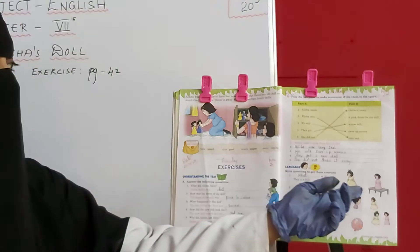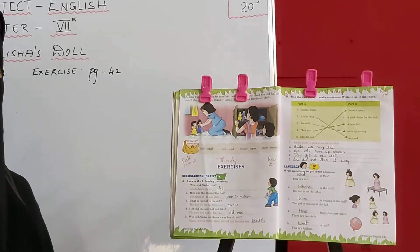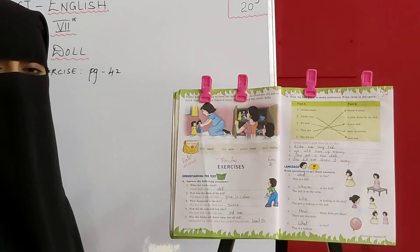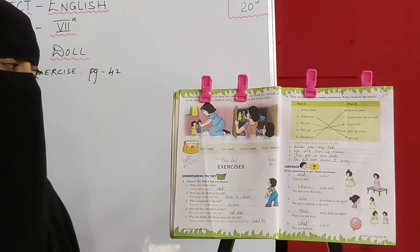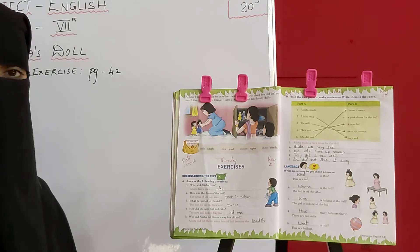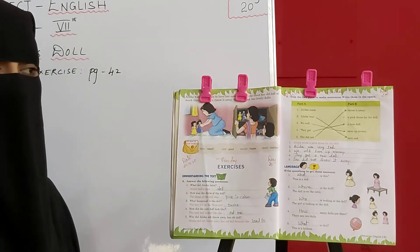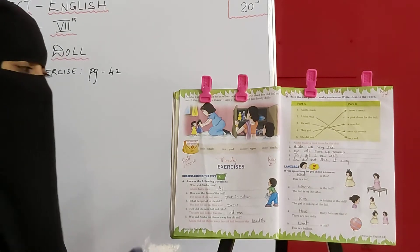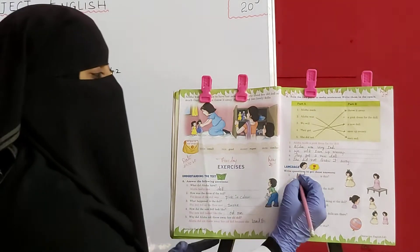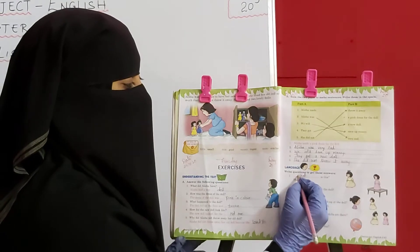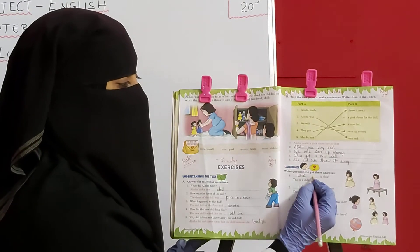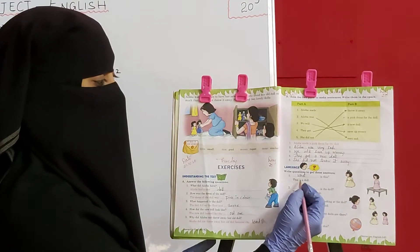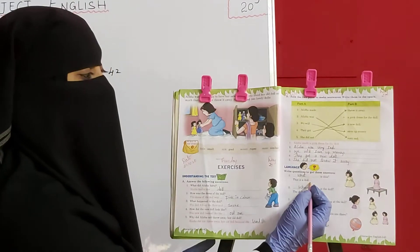Yeh kya hai? Doll hai. Toh question kya ho raha humara? Yeh kya hai? So in English: What is this? Yeh kya hai means What is this? What is this? Yeh question ka answer hoga: This is a doll.